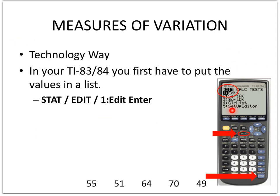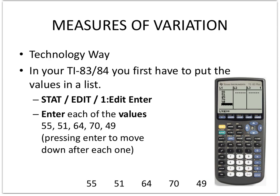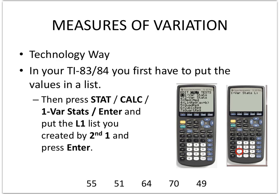By hitting stat, edit, and edit, press go through, type each one of these values in, pressing enter, so 55 enter, 51 enter. Then press stat, calc, one-variable statistics, and enter. So stat, arrow over to calc, one-variable statistics, and press enter.